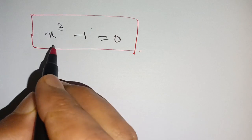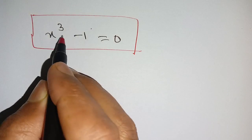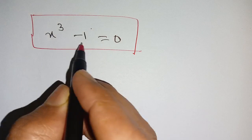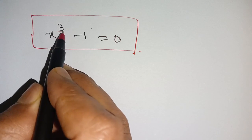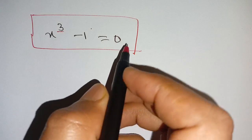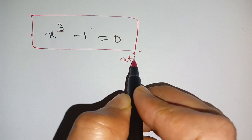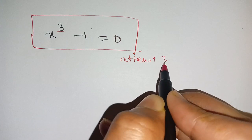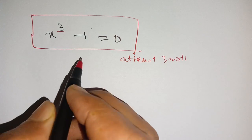Hello everyone. In today's video we are going to solve the equation x cubed minus one is equal to zero. Its largest degree is three, which means that it has at least three roots. Let's solve this.